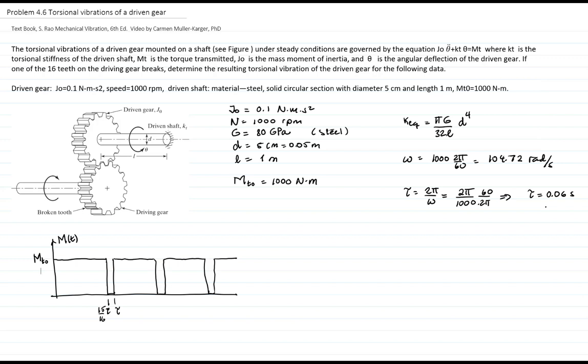In order to find the response of this system, the first thing that we have to do is write this expression, which is a piecewise function, in terms of Fourier series. Our function is a constant moment from t greater than zero and less than 15/16 τ, where τ is the period, and it's zero for the rest of the time.